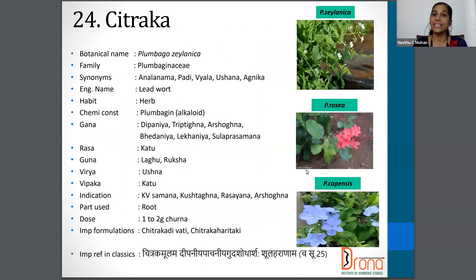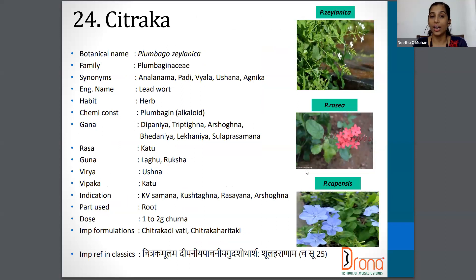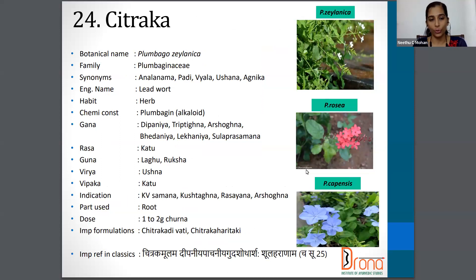The next one is Chitraka. Botanical name is Plumbago zeylanica. Family is Plumbaginaceae. Synonyms are Vyala, Ushana, Agnika, etc. The English name is Leadwort, and the part used is root. Dosage is one to two grams of Churna.